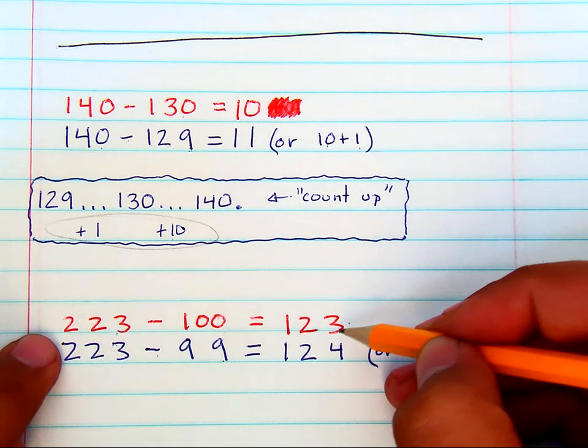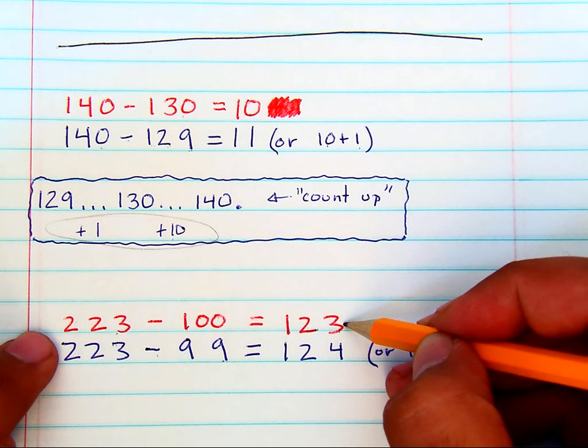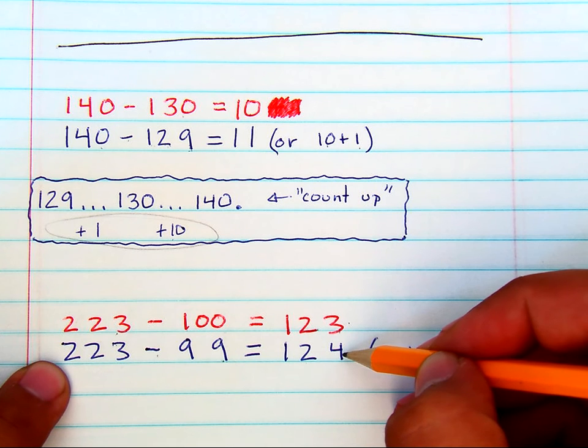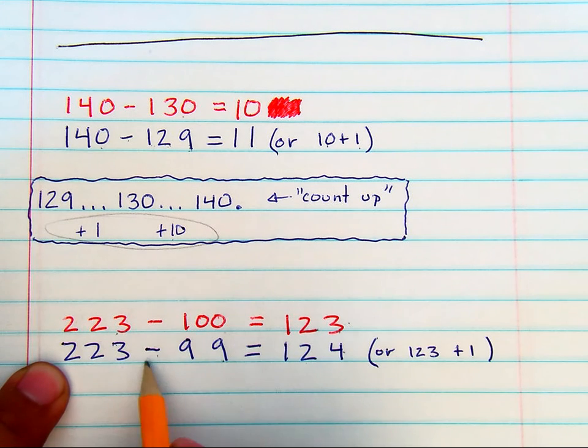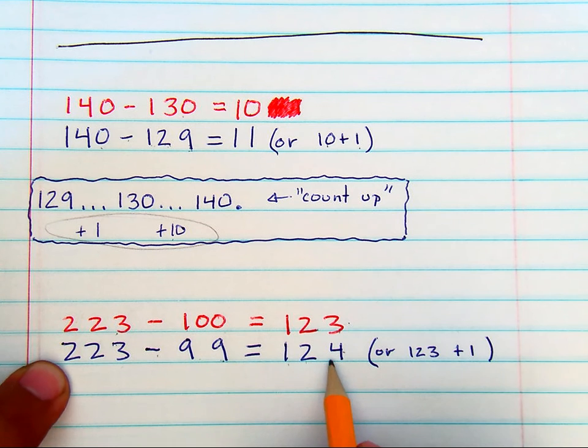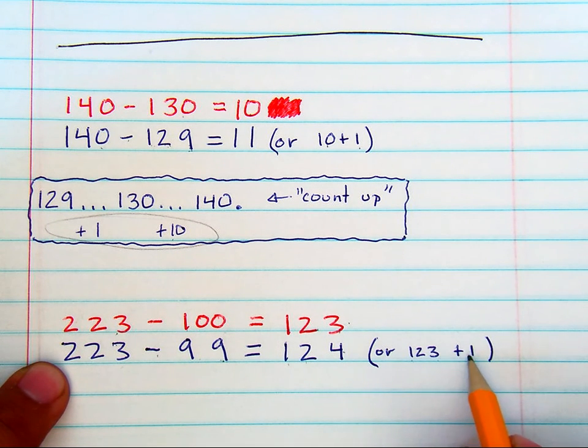So the answer that you're looking for is only going to be one more. The difference of 223 minus 99 is 124, which is the same as 123 with an extra one.